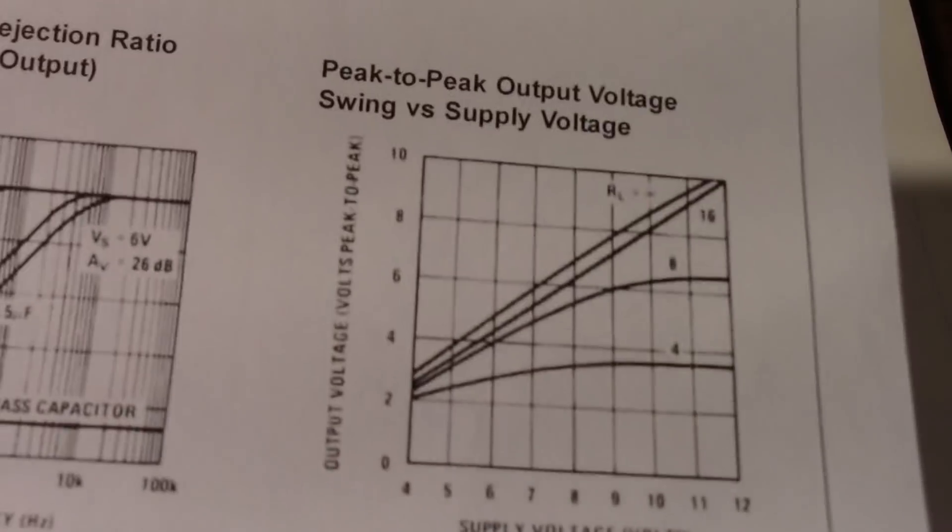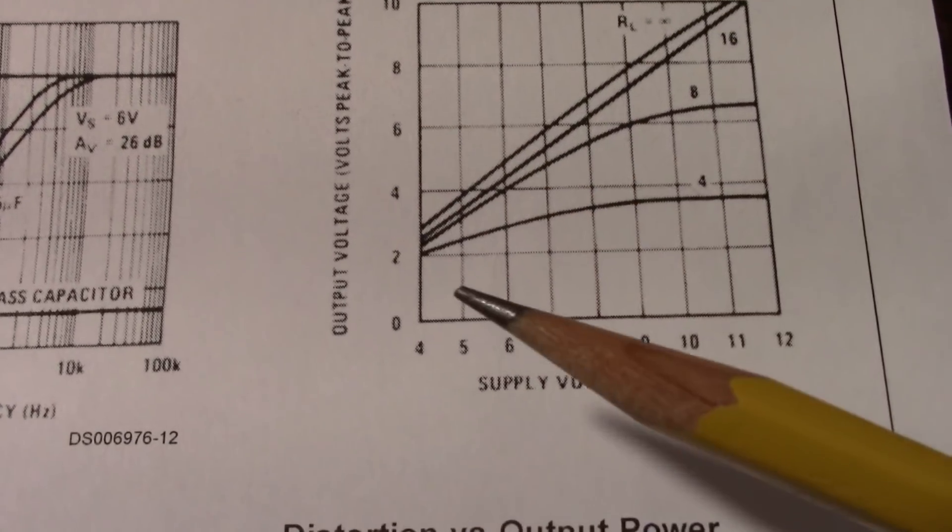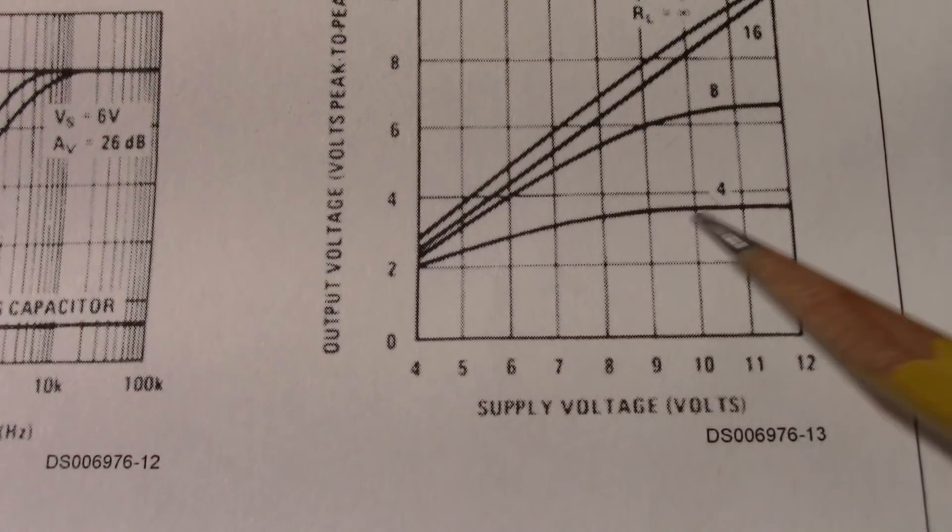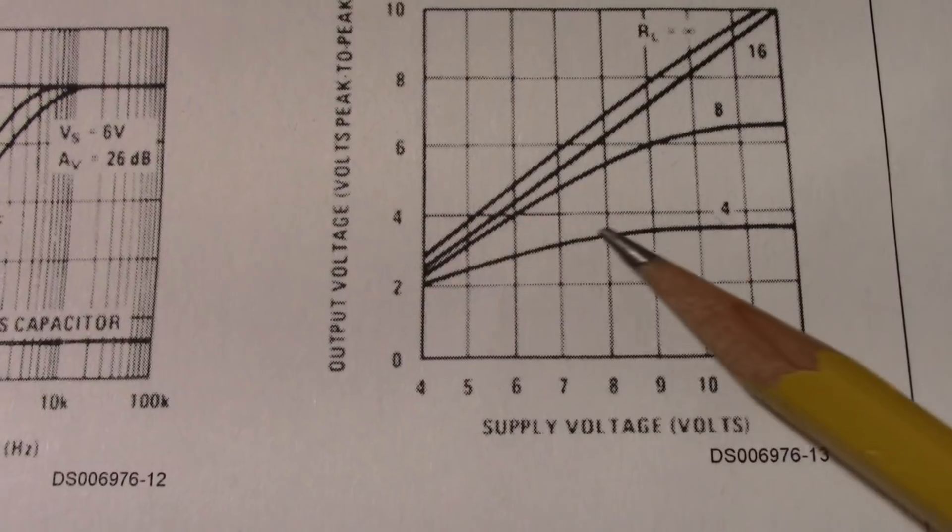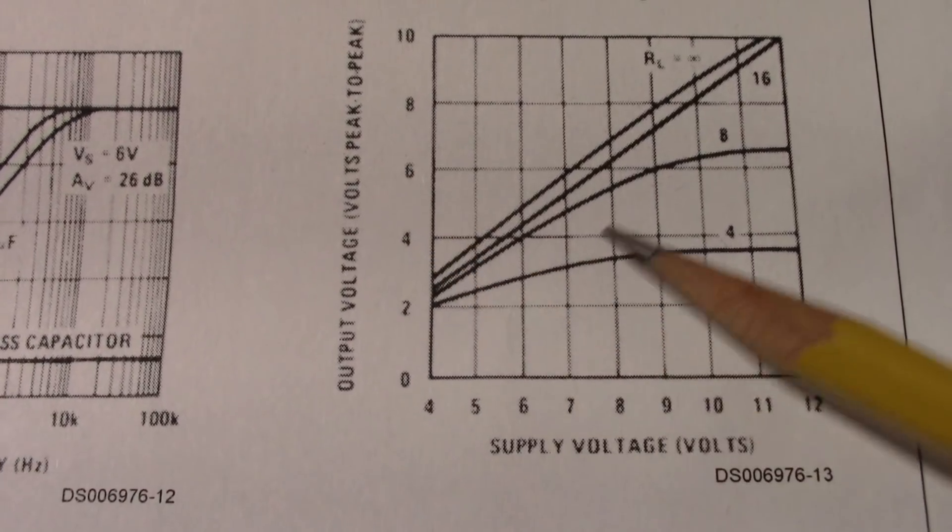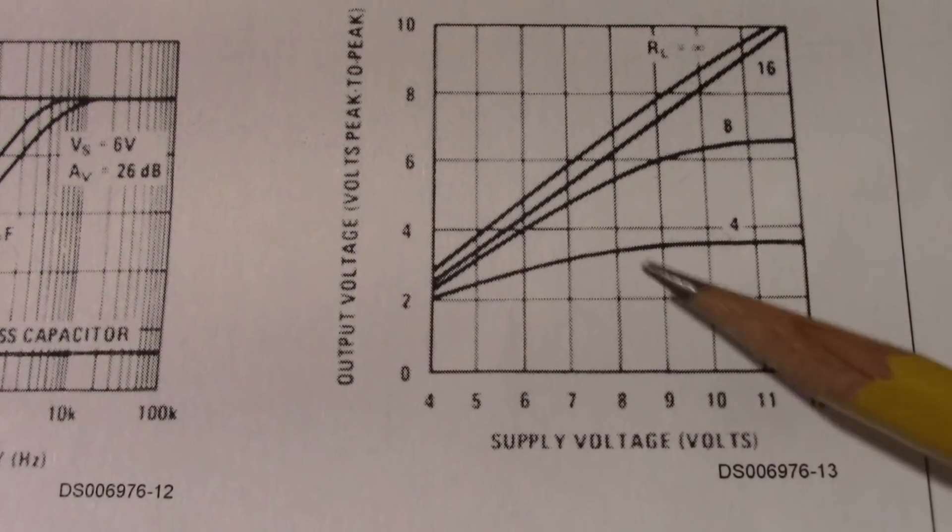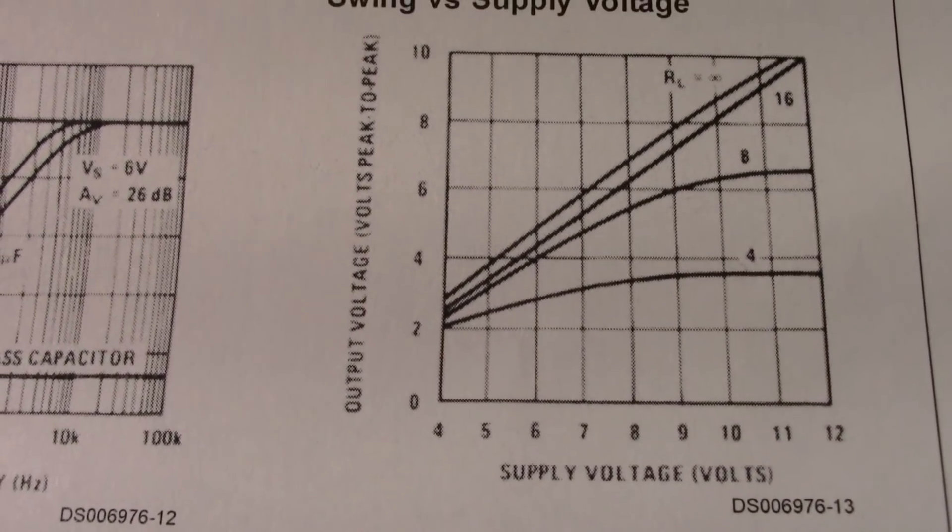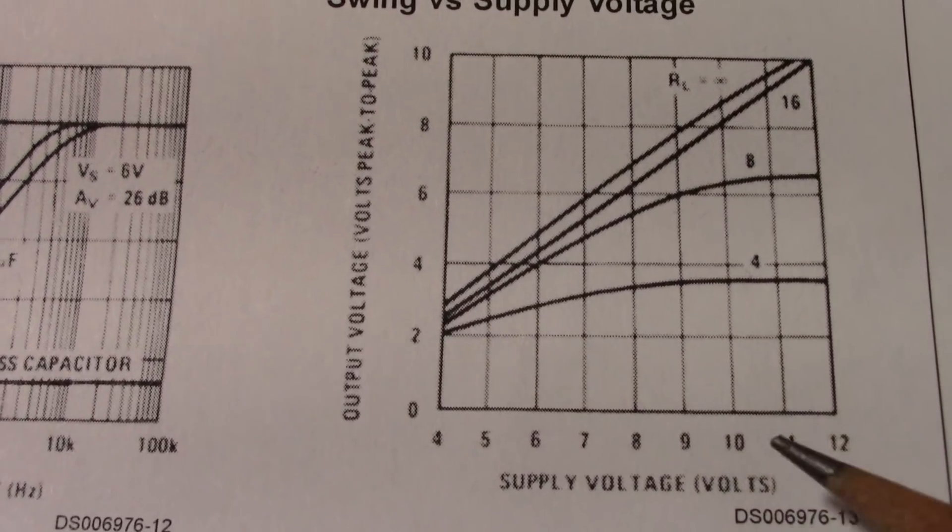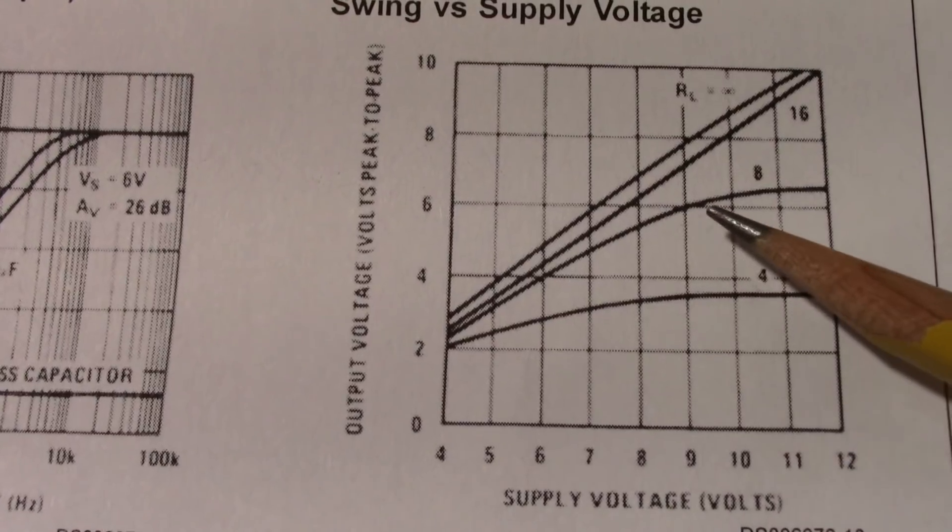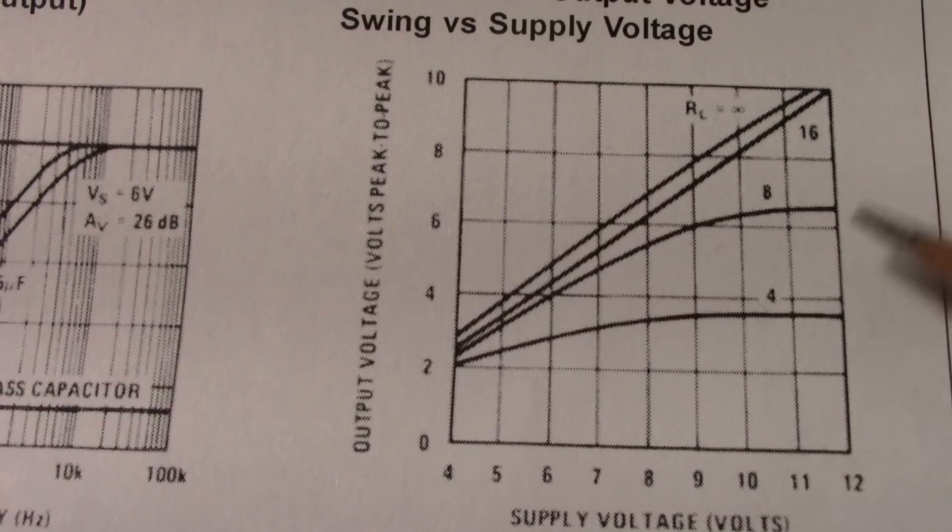The LM386 has pretty limited output power. I thought it was a good chip to try. These are the curves. Supply voltage versus output voltage swing. And look at the 4 ohm line. It just kind of flattens out. So if you have output swing that's not changing with increasing supply voltage, you're not getting any extra power. You're just getting waste heat.